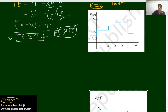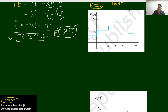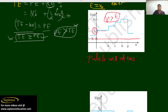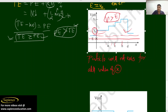Now for the next figure, using the same context: here we see that potential energy is greater than total energy for all values of x — whether a, b, c, or d — everywhere potential energy is greater than total energy. Therefore, the particle does not exist in this case for any value of x.